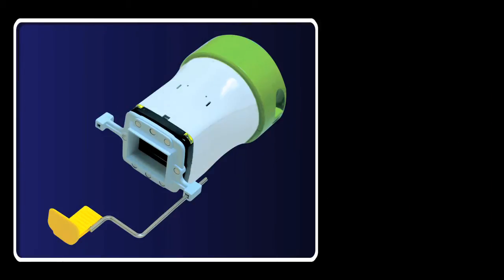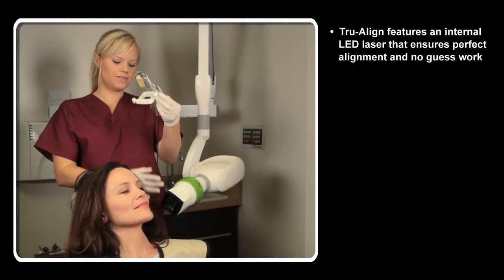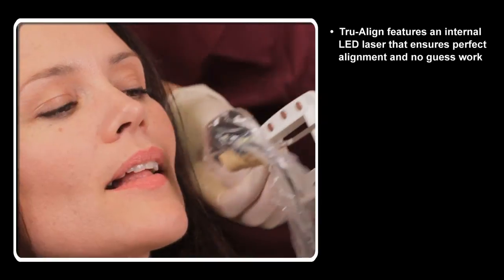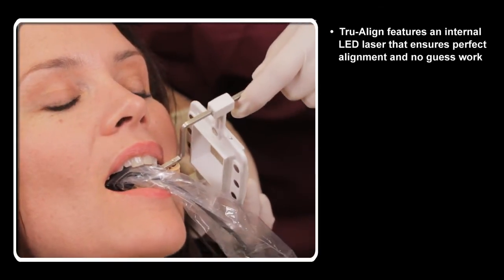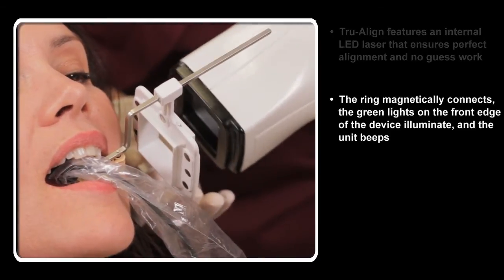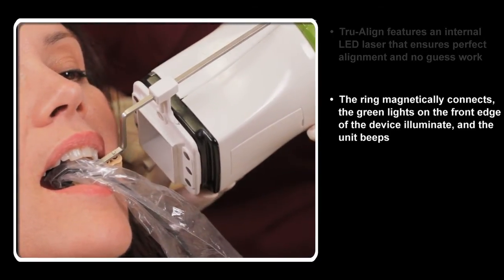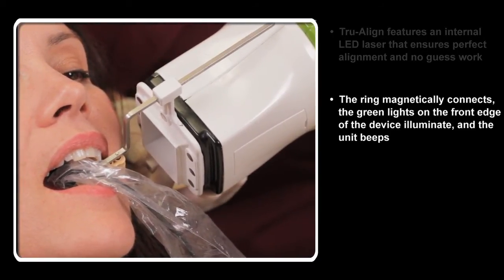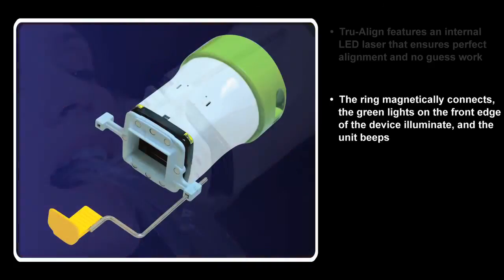TruAlign features an internal LED laser that ensures perfect alignment and no guesswork, eliminating cone cuts and retakes. When the laser and ring reflector are exactly aligned, the ring magnetically connects, the green lights on the front edge of the device illuminate and the unit beeps, indicating a perfect image every time.